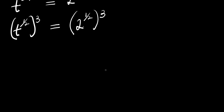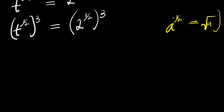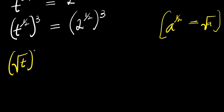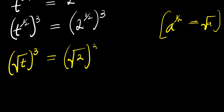Now from here, if you have a to the power 1 over 2, this equals the square root of a. So applying that here, we have the square root of t, raised to the power of 3, equals the square root of 2, raised to the power of 3.